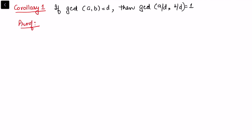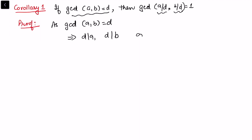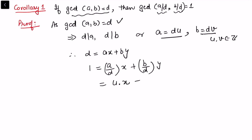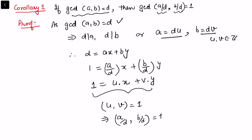As an immediate Corollary 1: if gcd(a,b) = d, then gcd(a/d, b/d) = 1. Note these are integers since d divides a and d divides b, so a = du and b = dv for some integers u and v. Since d is a linear combination ax + by = d, dividing both sides by d gives (a/d)x + (b/d)y = 1, which is ux + vy = 1. This means gcd(u,v) = gcd(a/d, b/d) = 1.